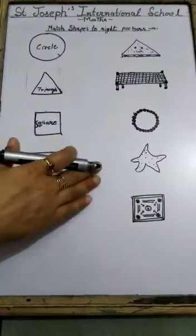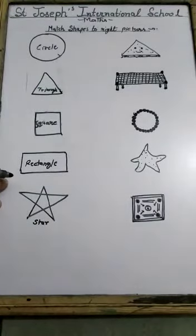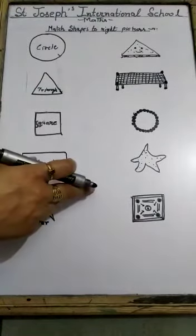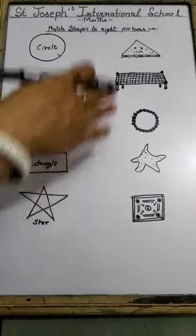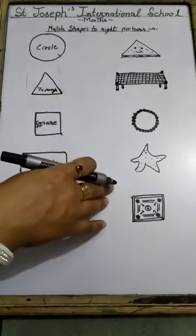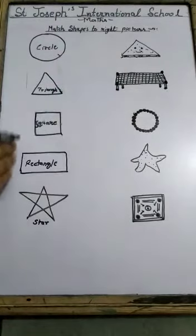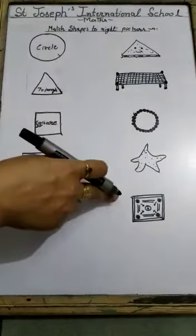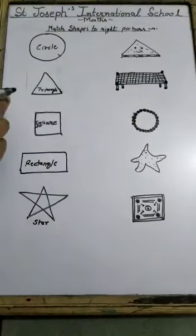Children, today we will do an activity related to shapes. We have learned about shapes, so today we will do this activity. On one side we have drawn the shapes and on the other side we have drawn the figure or picture. We will match the shapes to their right picture or figure. So let's start the matching.